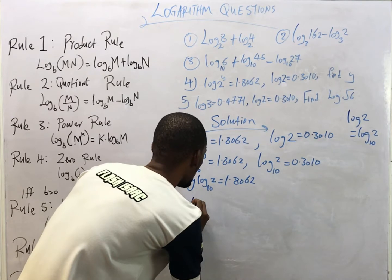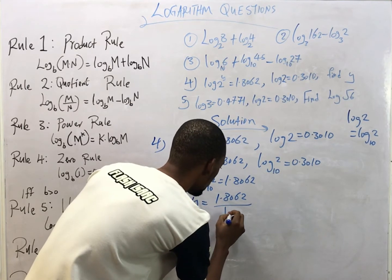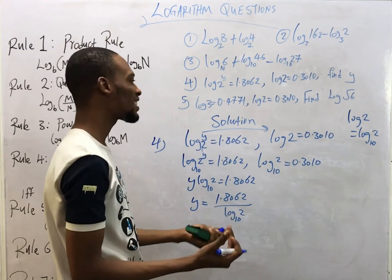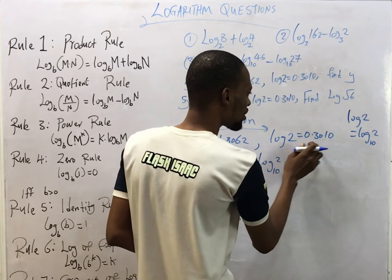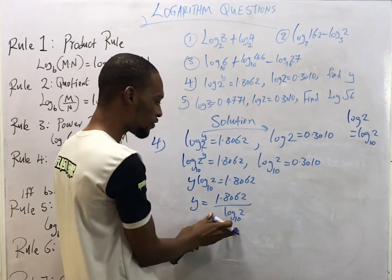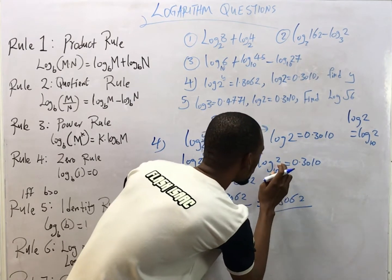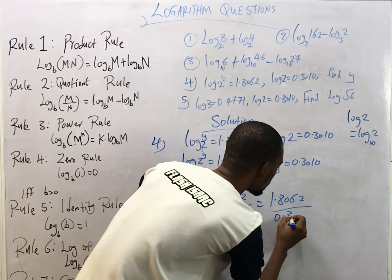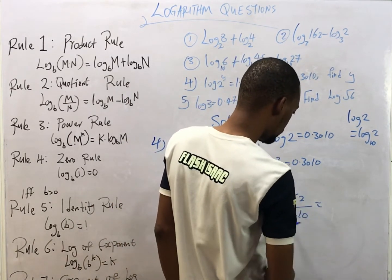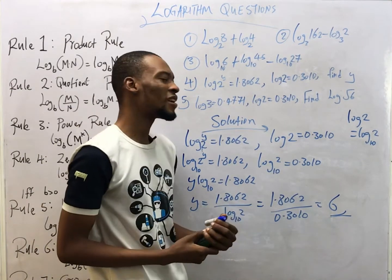From there, y = 1.8062 / log₁₀(2). The good news is they already gave us log 2 to base 10 = 0.3010. So this is simply 1.8062 / 0.3010, which gives us 6. The answer to that question is 6.